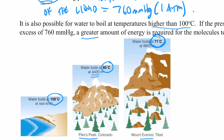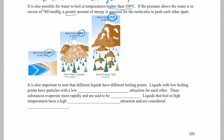It's also important to note that different liquids have different boiling points. Liquids with low boiling points have particles with low intermolecular attractions — these substances evaporate more rapidly and are said to be volatile. For example, if you spill toenail polish remover on your foot, it evaporates very quickly and feels cold. The intermolecular forces between acetone molecules are lower than in water, so they evaporate more quickly, and evaporation is a cooling process.